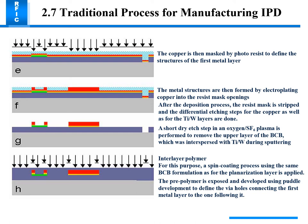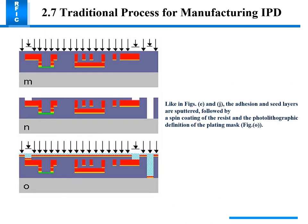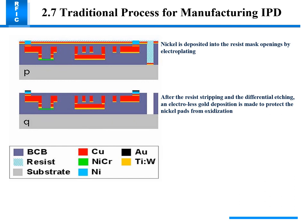After polymer curing, a tri-etch step is carried out in oxygen SF6 plasma to remove BCB residues remaining after development. For the second metal layer, the same process steps are repeated. Electroplating of the metal structure is performed, resist is removed, and differential etching is done. Adhesion and seed layers are sputtered, followed by spin coating and photolithography. Nickel deposition into photoresist openings is done by electroplating, followed by resist stripping, differential etching, and electroless gold deposition to protect nickel pads from oxidation.